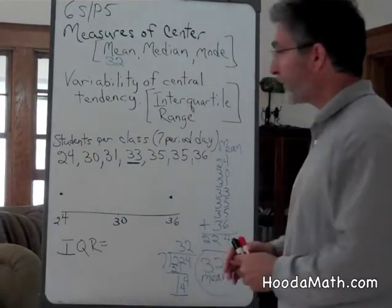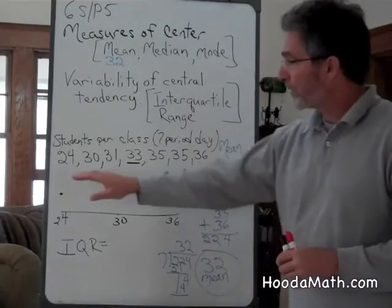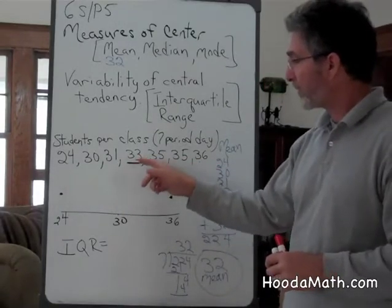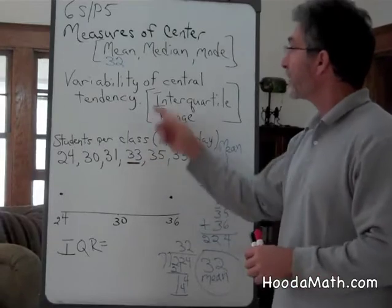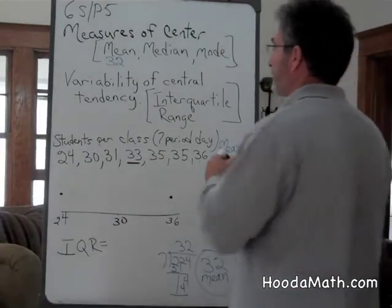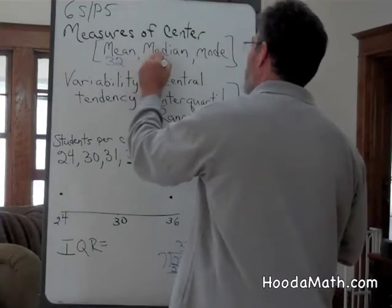If we wanted to find the median, we put the data in order, and the center of that, or the central number, is 33. That would be the median amount of students in each class.